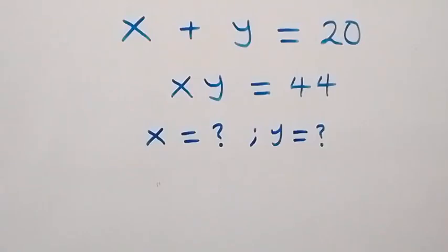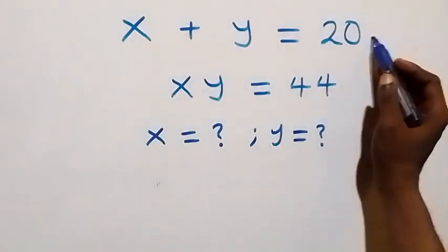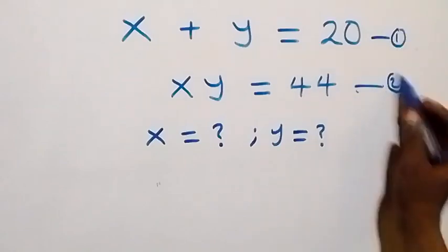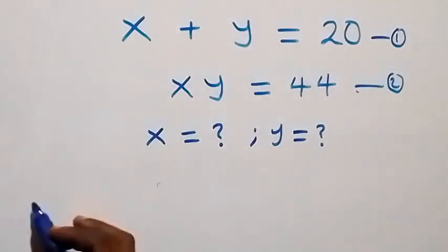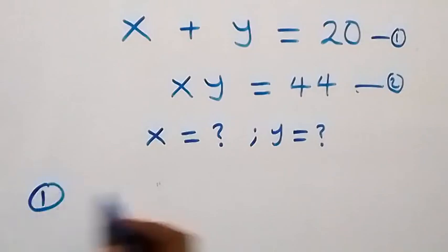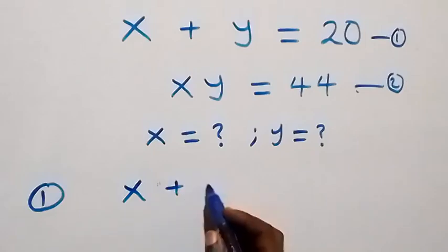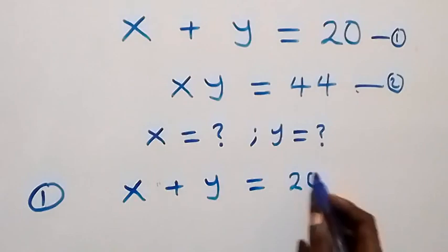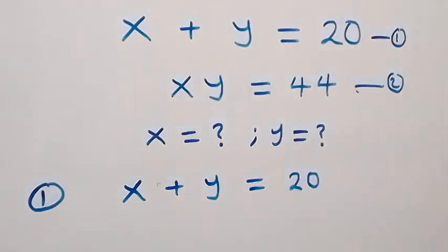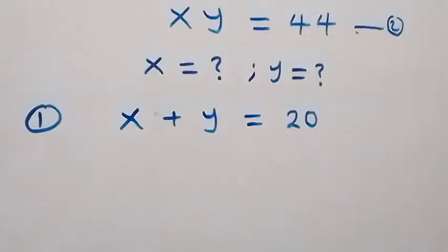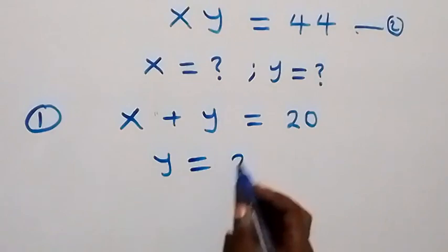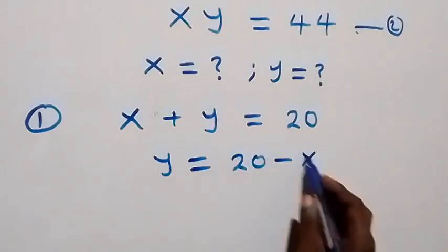Hello, you are welcome. How to solve these systems of equations. Let's label this as equation one and this as equation two. From equation one we have x plus y equals to 20. Let's make y the subject, so this becomes y equals to 20 minus x.